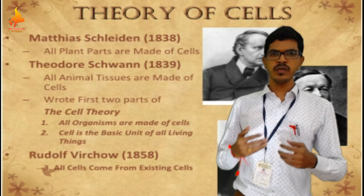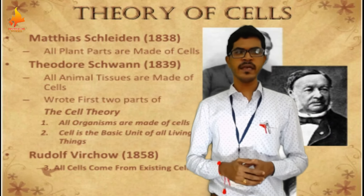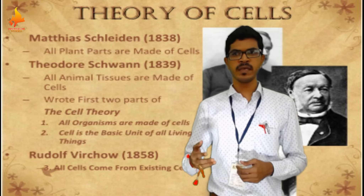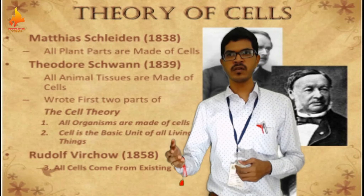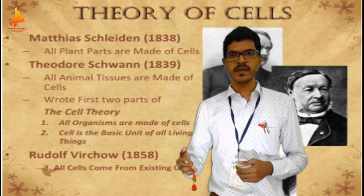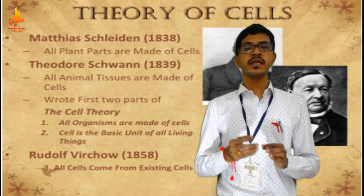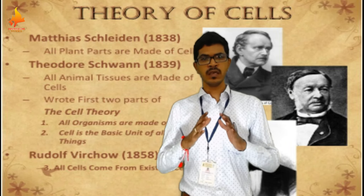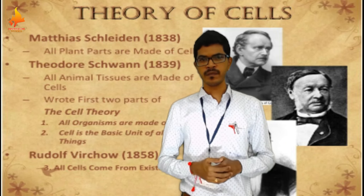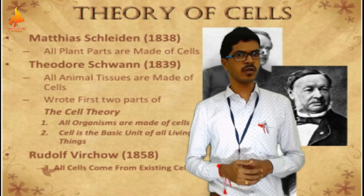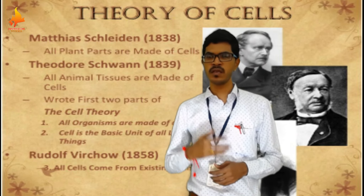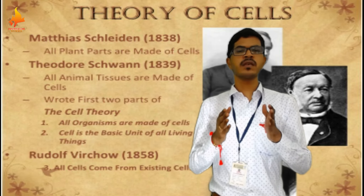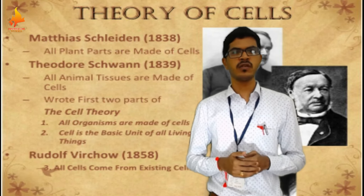According to the cell theory, they say that all living organisms are made up of cells — may it be plants, may it be animals, whatever it is. And the second point is that cell is the basic unit of all living organisms. Without cells, there is no life. Even if it is a unicellular organism, it is a cell. Even if it is a multicellular organism, it is made up of cells. So the cell is the basic structural and functional unit of all living organisms.